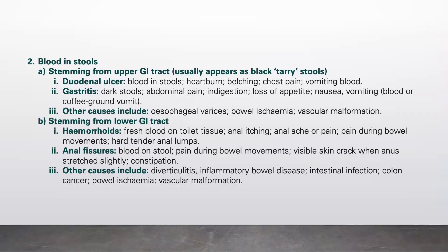It can also be due to gastritis, where there are dark stools, abdominal pain, indigestion, loss of appetite, nausea, vomiting, or blood in coffee-ground vomit. Other upper GI causes include esophageal varices, bowel ischemia, and vascular malformation.